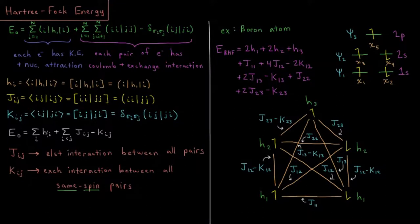So let's try to put these notations into practice a bit by using the example of a boron atom. So boron being the fifth atom in the periodic table, its ground state electron configuration would be 1s2, 2s2, 2p1.